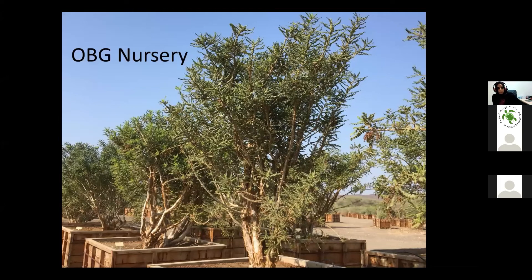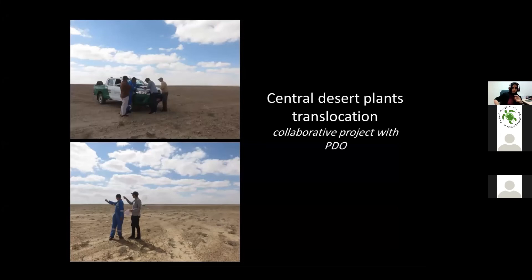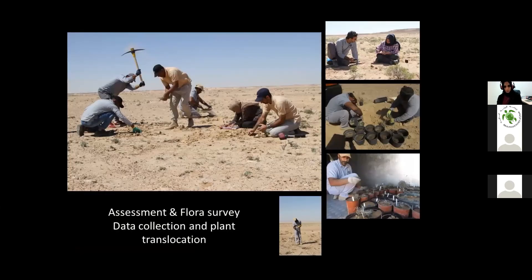Another example is a collaborative project with Petroleum Development Oman — they planned a new oil field with pipelines and roads, called us, and asked how we could help. We visited the site and eventually dug the plants and brought them back to the nursery. Plants from the central desert are sensitive to translocation, and we were not sure we would succeed in bringing them back to the nursery, but it was the best we could do, as the oil field would proceed regardless.